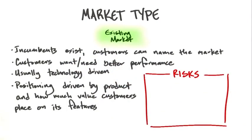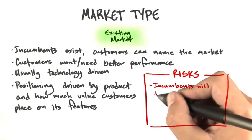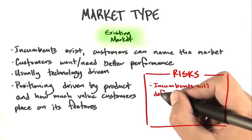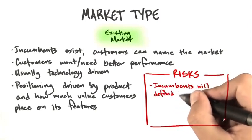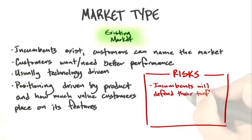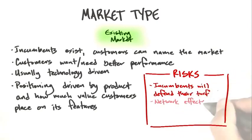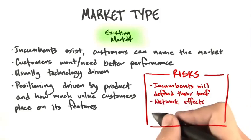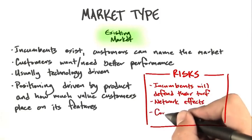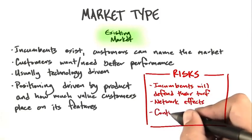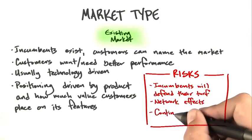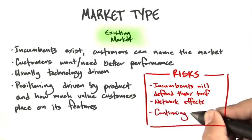The risk in an existing market is thinking that the incumbents are dumb. Typically, incumbents — unless they're large corporations that are falling asleep — will defend their turf. Remember the network effects of an incumbent. It might mean it's not only about their product, but all the ancillary services and third-party offerings they have in their catalog.